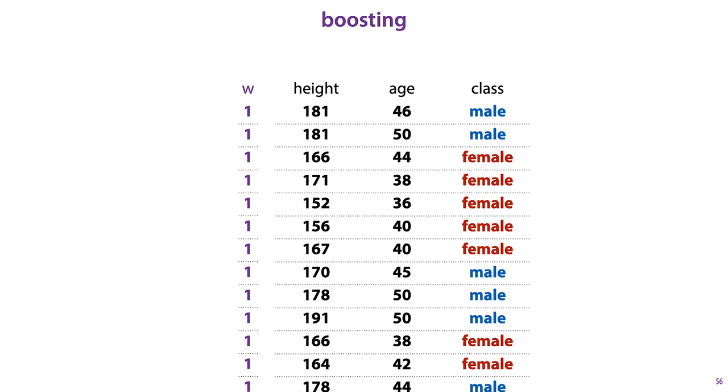Most boosting methods work by adding a weight to each instance in the data. For each new model, we lower the weights of the points that the previous models got right, and we increase the weight of the points that the previous models got wrong. And we then train the next model to focus on this re-weighted version of the data.